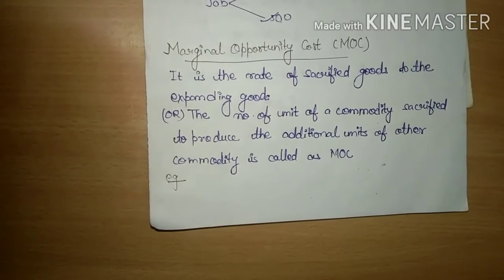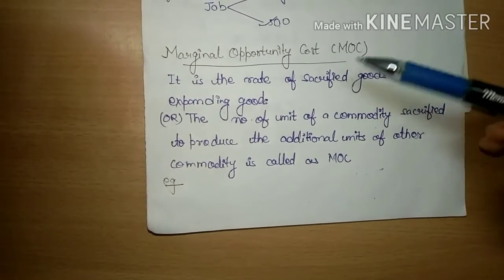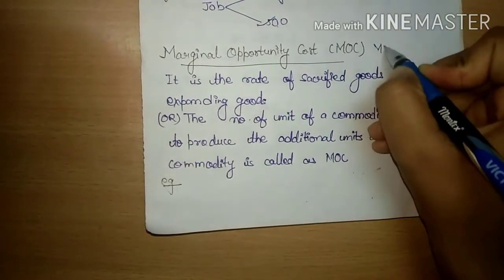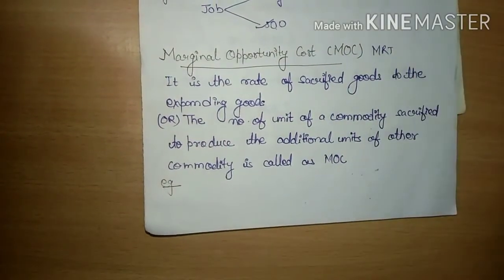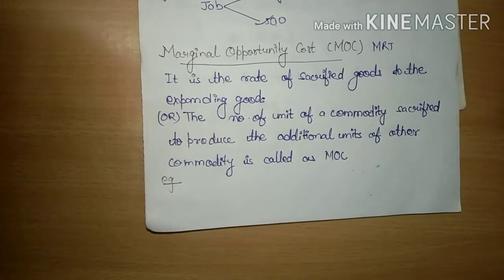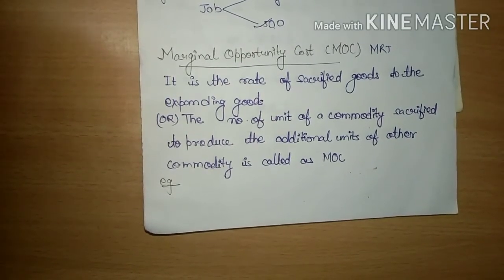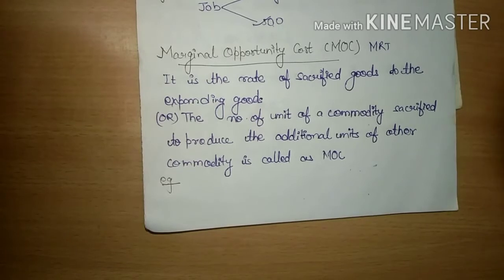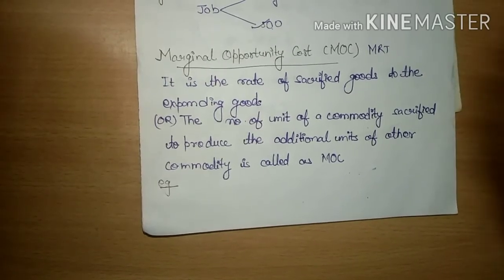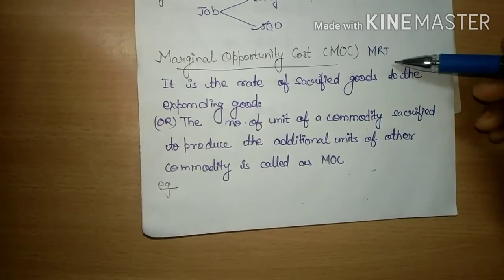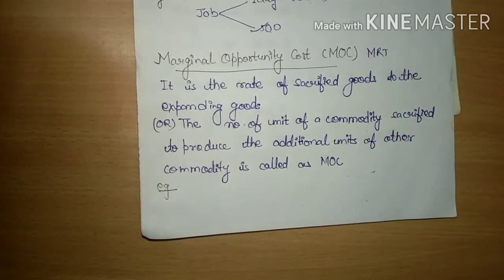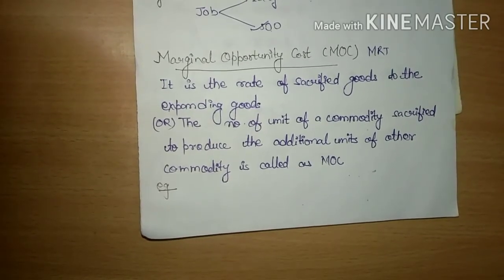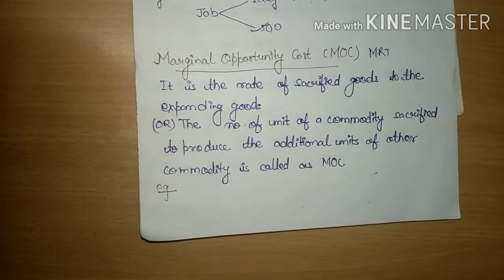Marginal Opportunity Cost ya MOC — isko hum log MRT bhi kehte hain. MRT ka full form kya hota hai — Marginal Rate of Transformation. Toh yahi naam aapko humne us pehli wali video mein bataya hai, ki usme aapka PPC curve ko hum log transformation curve bhi kehte hain. Toh usi se hi MRT aaya hai. Toh iski meaning dekhte hain: it is the rate of sacrificed good to the expanding good.